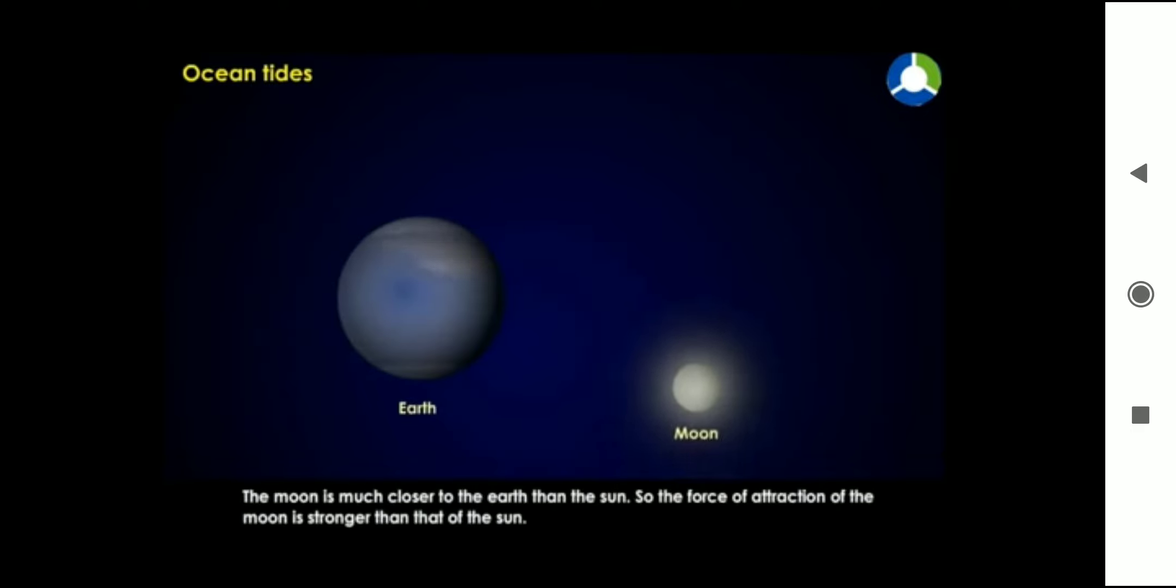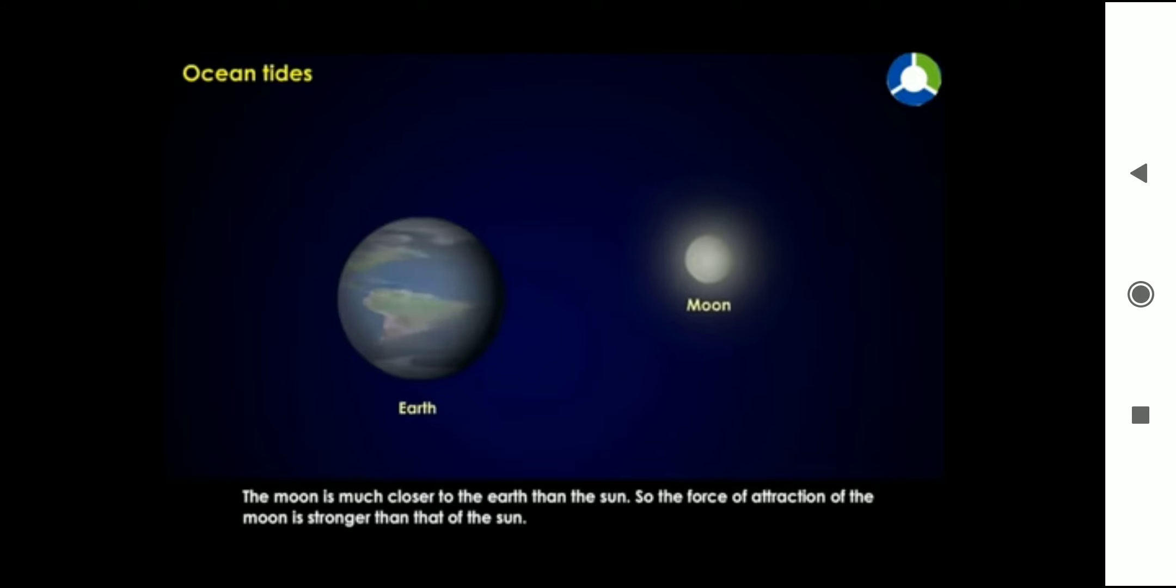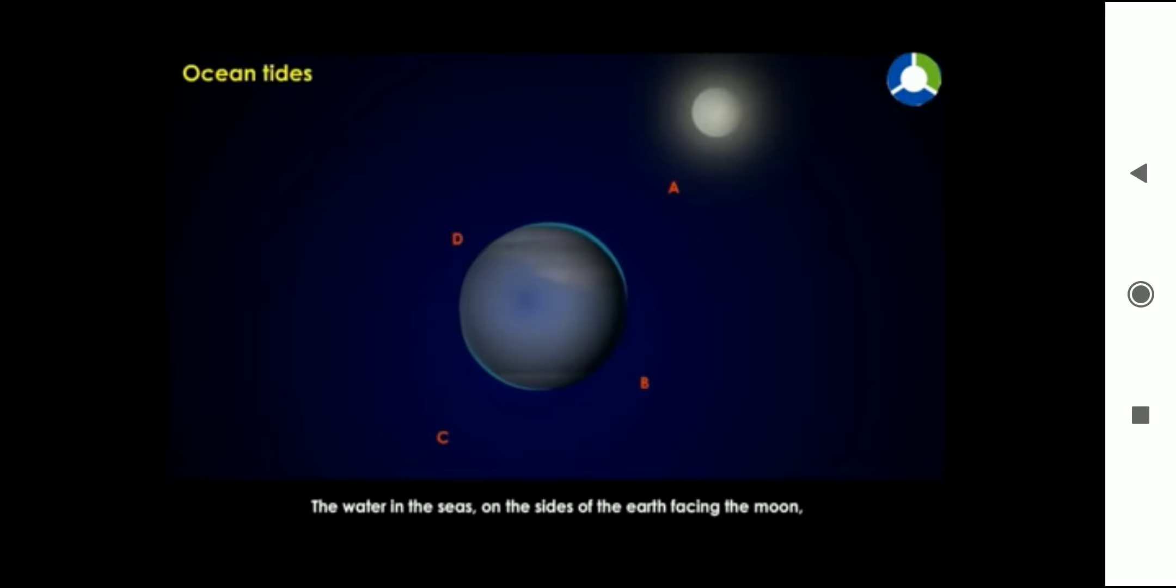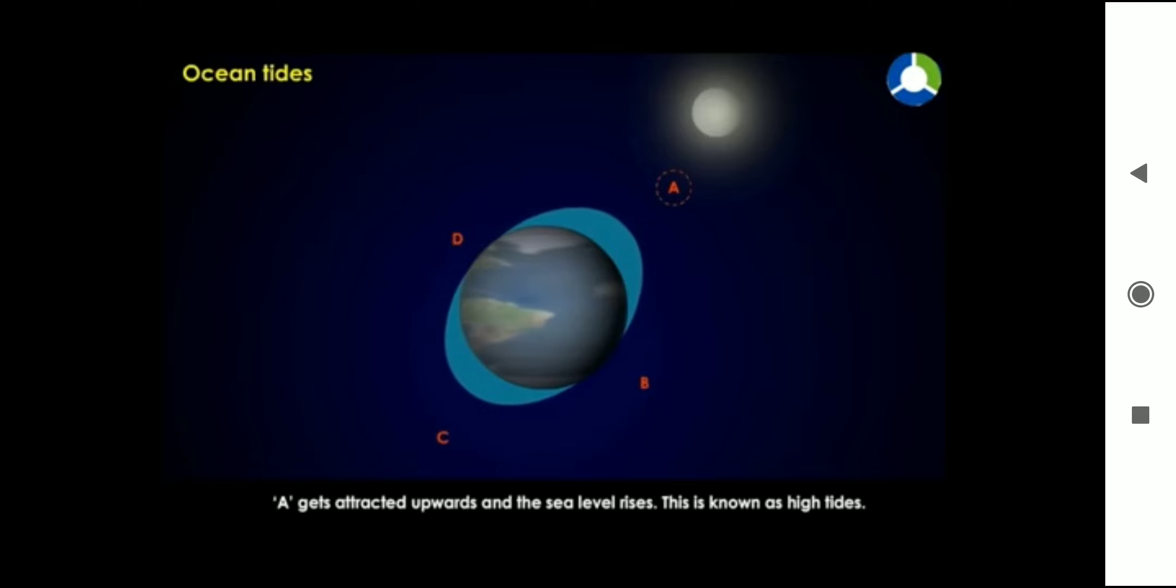The moon is much closer to the earth than the sun, so the force of attraction of the moon is stronger than that of the sun. The water in the seas on the side of the earth facing the moon, point A,